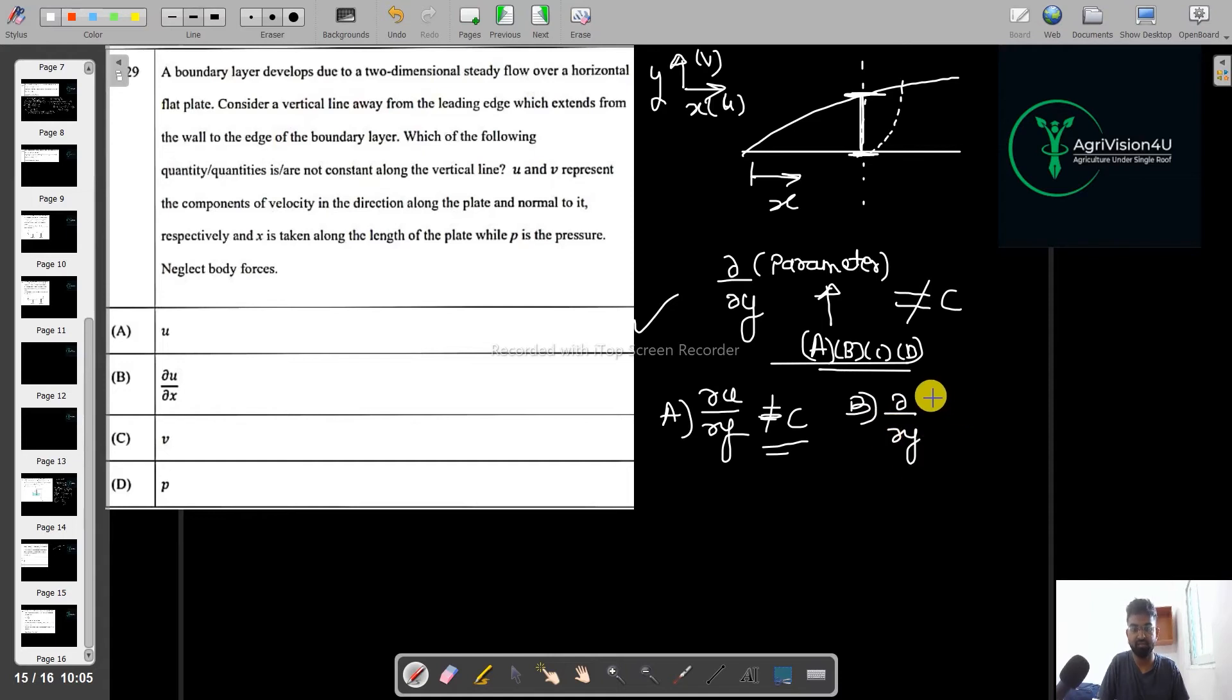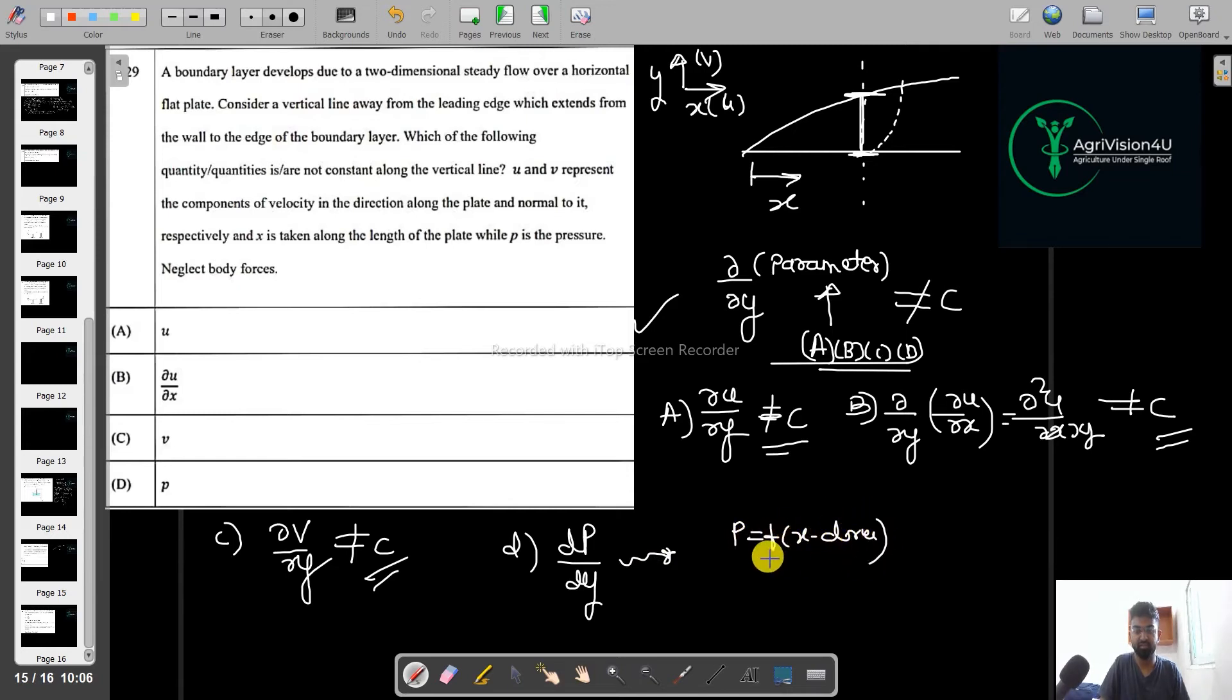Del square u by del x del y will also not be constant. If I talk about option C, del v by del y will also not remain constant. When I talk about option D, dp by dy, we know the concept that pressure is varying as a function of x direction. Pressure always varies in the x direction, so del p by del y along that particular vertical line will remain constant. Option D is not there for sure. According to me, option A, option B, and option C should be your answer.